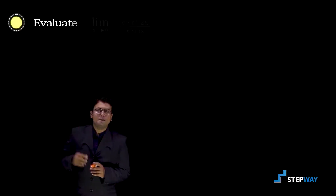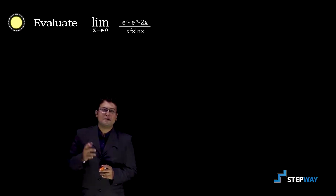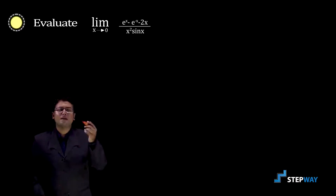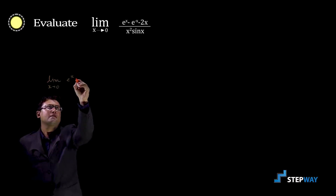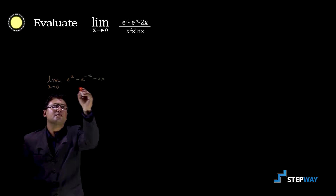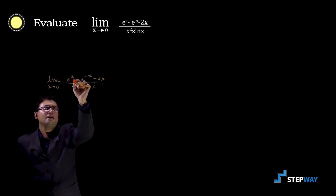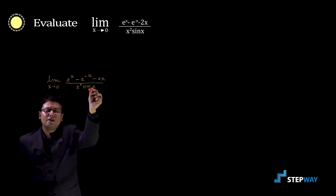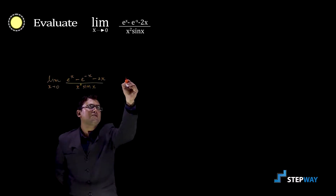Let us take an example of an indeterminate form. Evaluate the limit as x tends to 0 of (e raised to x minus e raised to minus x minus 2x) divided by (x squared times sine x). When we put x equal to 0 in the numerator, e raised to 0 is 1, minus 1, minus 0, so numerator is 0. In the denominator, x is 0 and sine 0 is 0, so denominator is also 0. This is a 0 by 0 indeterminate form.